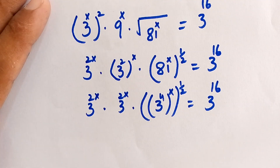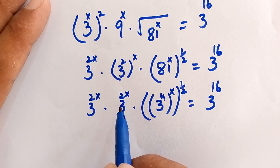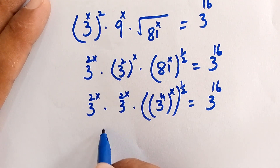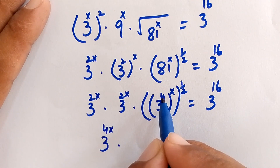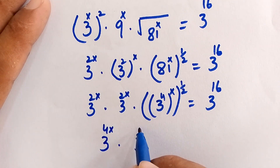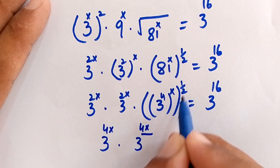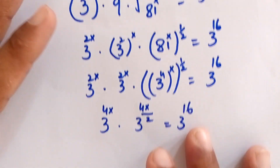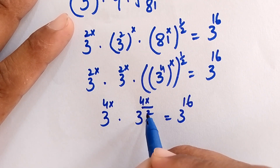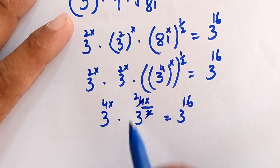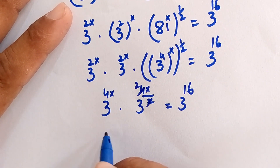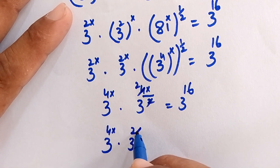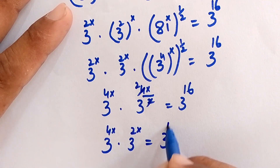In the next step, 3^(2x) · 3^(2x) = 3^(2x + 2x) = 3^(4x). Then 3^(4x) · 3^(2x) = 3^16. Combining the exponents on the left: 4x + 2x = 6x, so we have 3^(6x) = 3^16.